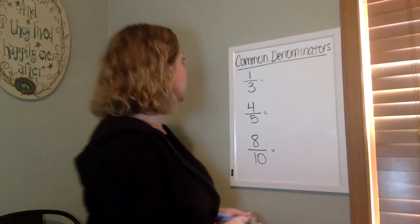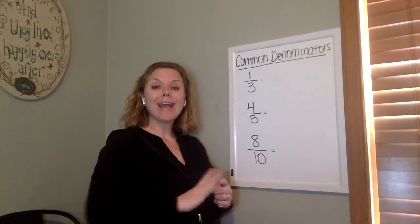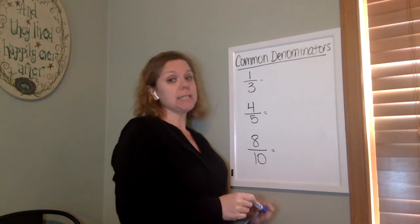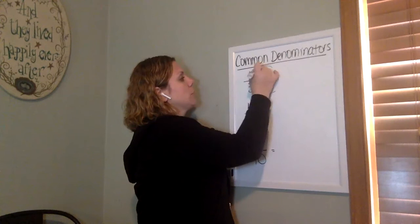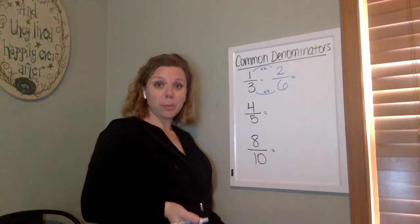So step two is going to be to find some equivalent fractions to go with these fractions that I have listed up here. So if you have a whiteboard or a piece of paper, if you could just jot down one-third. Now I want any equivalent fraction that goes with one-third. Any. There's a lot.